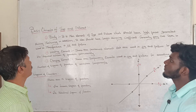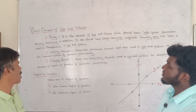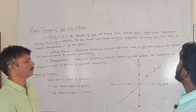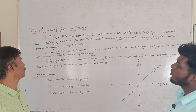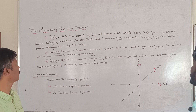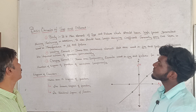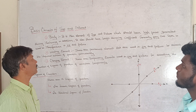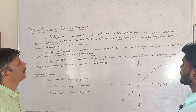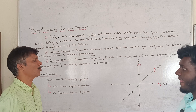What are the basic elements of Jigs and Fixtures? There are three elements. The first one is the body, which is the main element of Jigs and Fixtures. It should withstand the high forces generated during machining and should have a large damping coefficient. Generally, grey cast iron is used to manufacture Jigs and Fixtures.